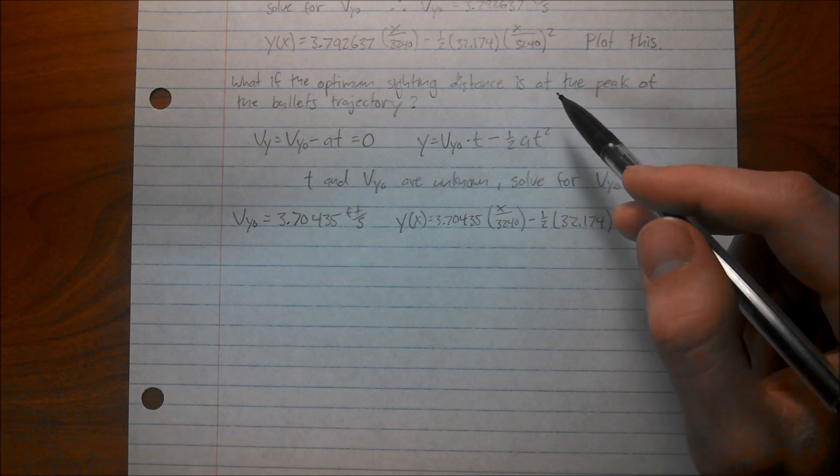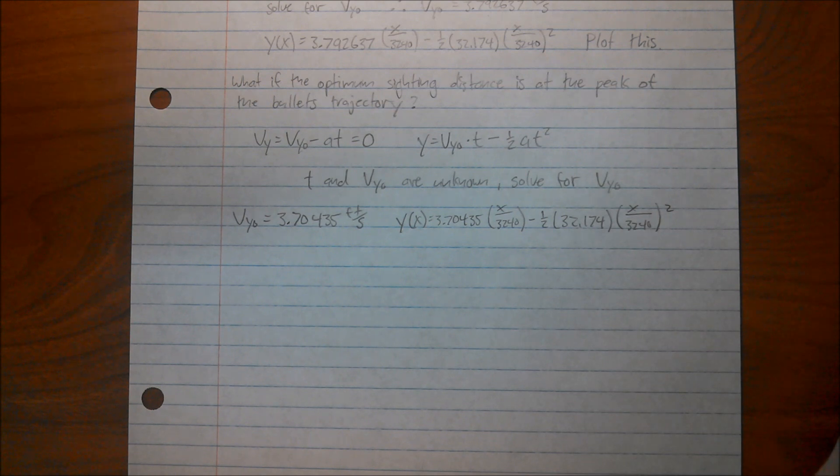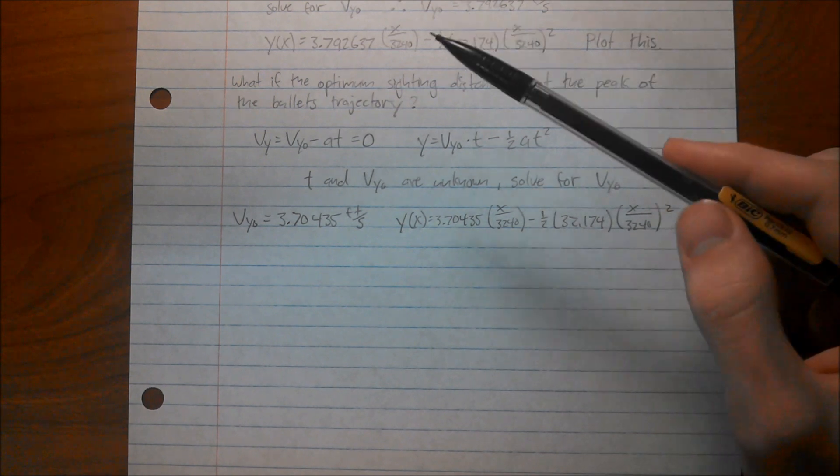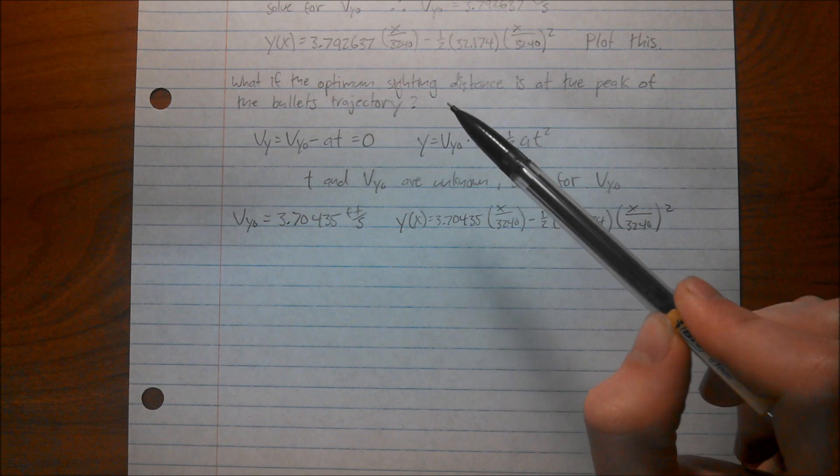So, if we assume that the optimal sighting distance is where the bullet's going to peak, i.e. it's not going to go above the sight line, the highest point is at the sight line, then we know that the y velocity is 0 at this point, because at that point it's transitioning from going up to coming back down.